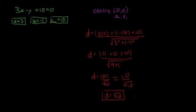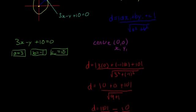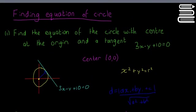If d equals root 10, that means r equals root 10. Because remember, this distance we just calculated, the perpendicular distance between the center and the line here, that is our radius. So now that we have that, we can fill it into x squared plus y squared equals r squared.